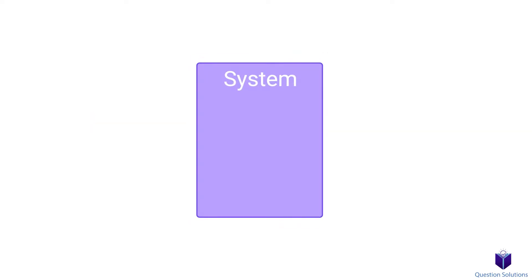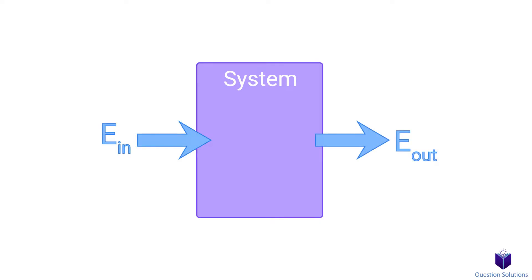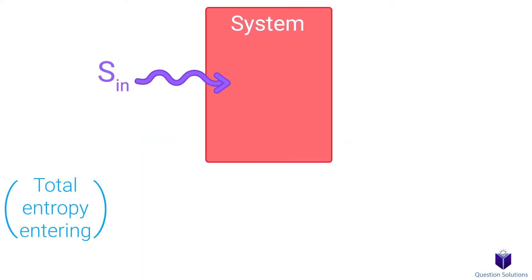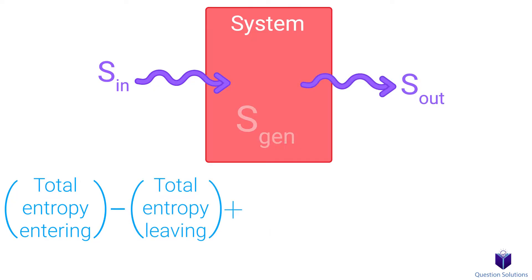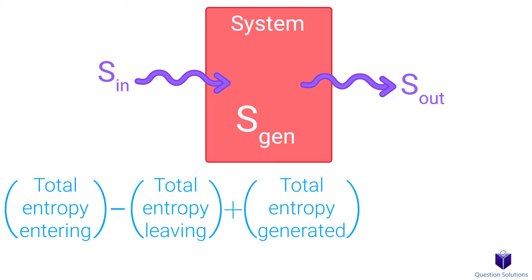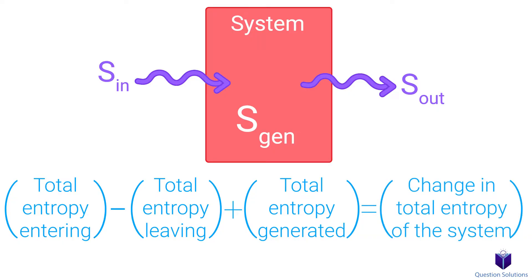Remember that with energy balance, we just had energy in and energy out, and that gave us the change in energy of the system. But for entropy balance, we have entropy entering, entropy leaving, and entropy generated within the system, and all of that gives us the change in total entropy of the system. We can write that like this.